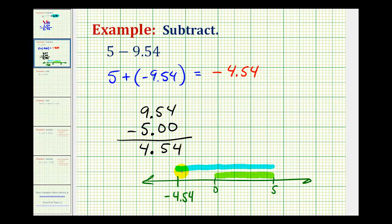So this distance here is the distance that we're getting when we subtract the absolute values. So this distance is 4.54, but because we're left of zero, it's actually negative 4.54.